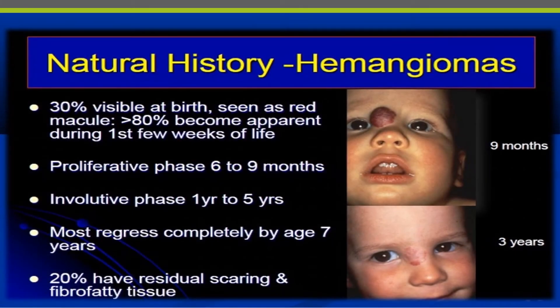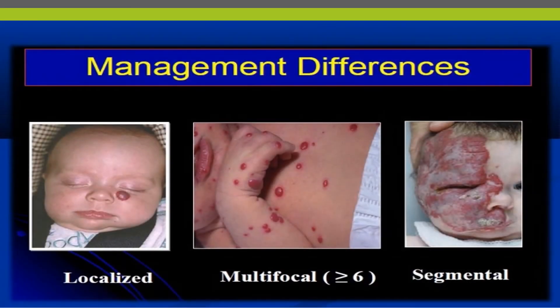Regarding the natural history of hemangioma: 30 percent are visible at birth as red macules, and greater than 80 percent become apparent during the first few weeks of life. There are two phases: the proliferative phase, lasting six to nine months, and the involutive phase, lasting one to five years. Most regress completely by age seven, and 20 percent have residual scarring and fibrofatty tissue.